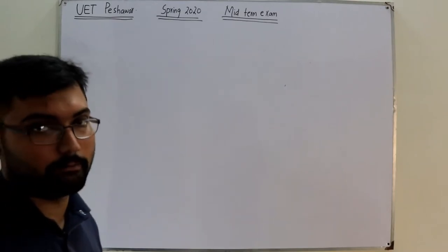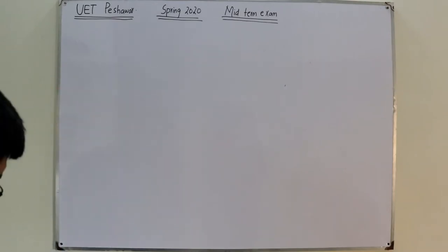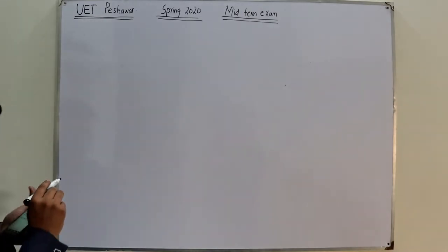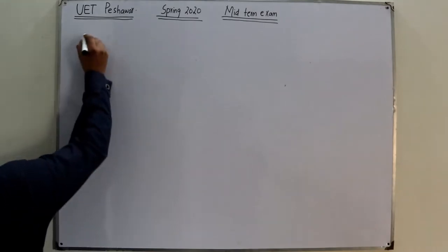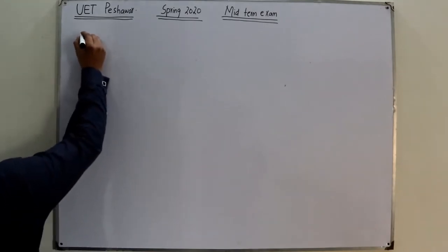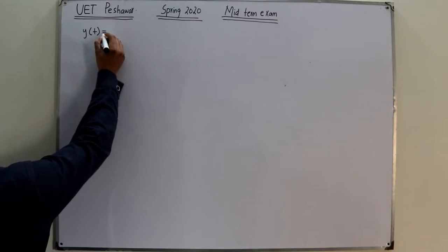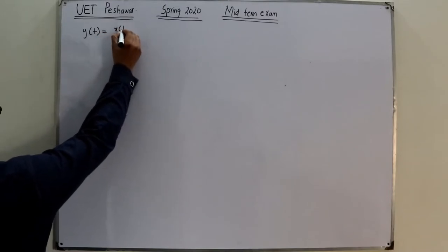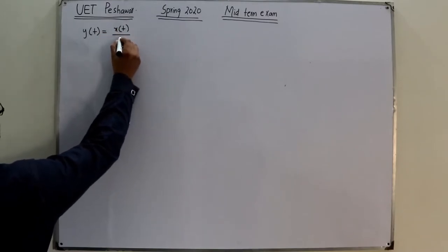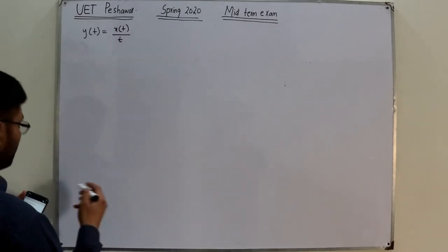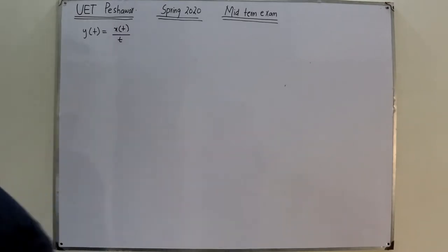The first question: y(t) is equal to x(t) divided by t. The question asks: is this a stable system or an unstable system?